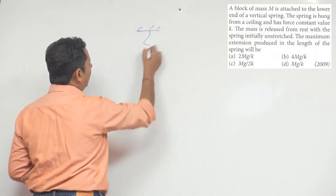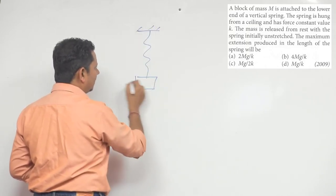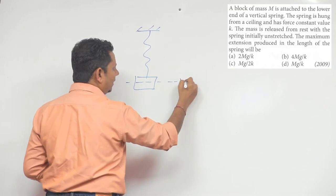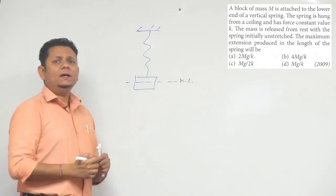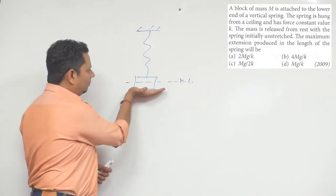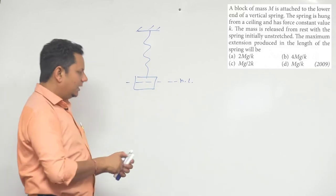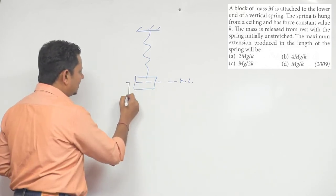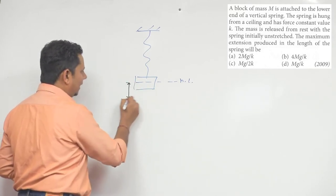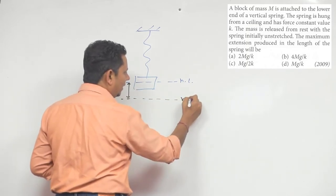This spring, the natural length of the spring - if you go up at this point, you can go down to this place.